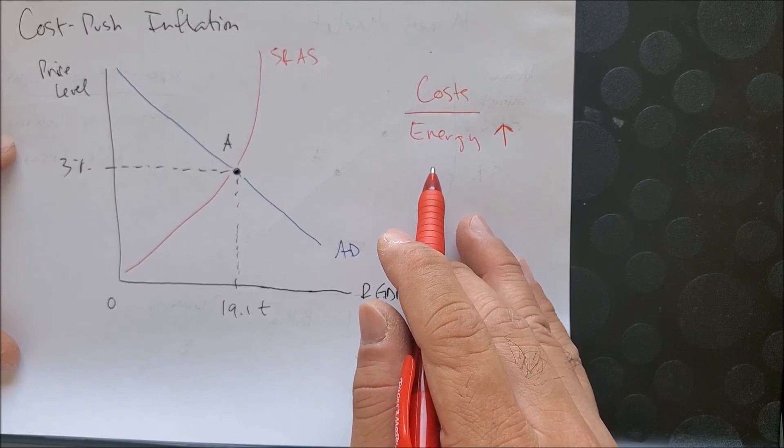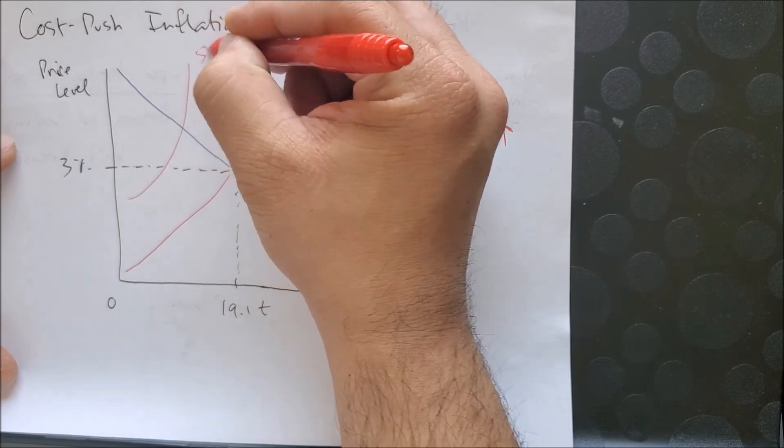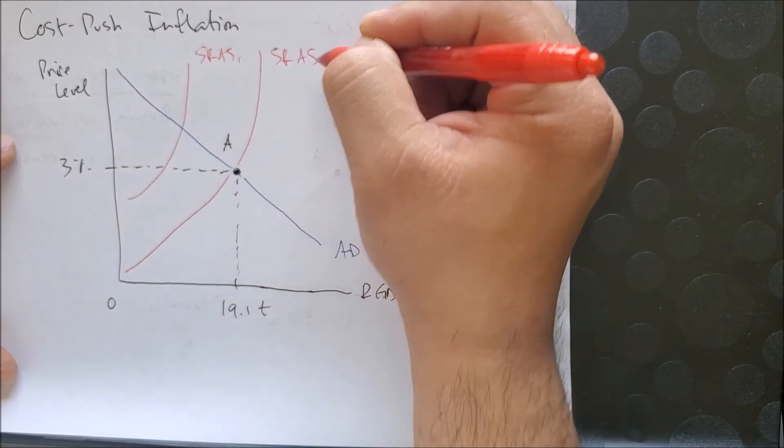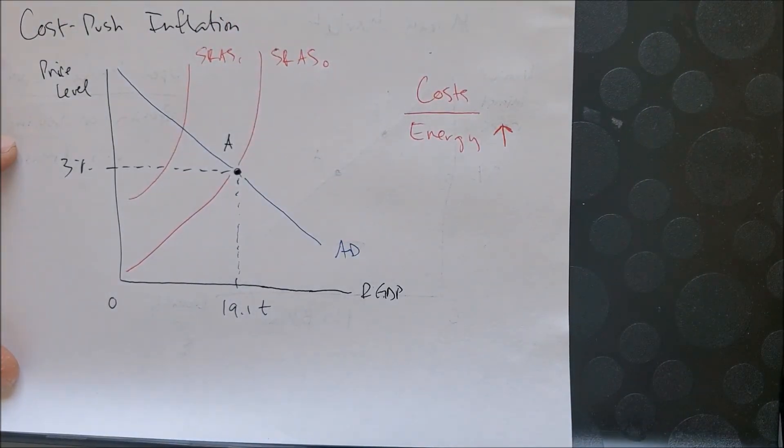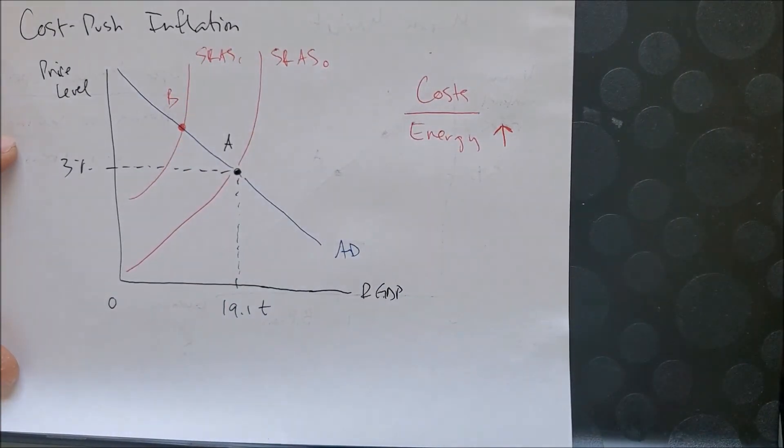This will shift the SRAS to the left. We can label that SRAS1, and now we have a brand new equilibrium point called point B.